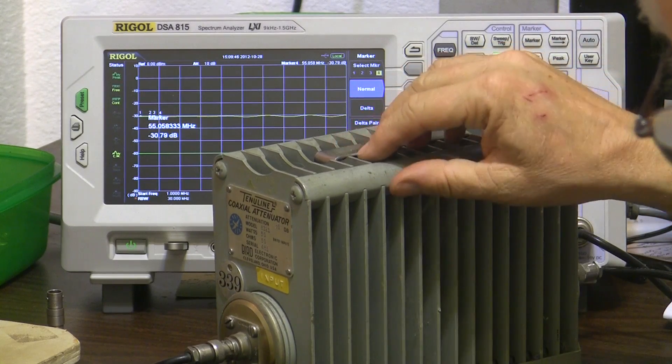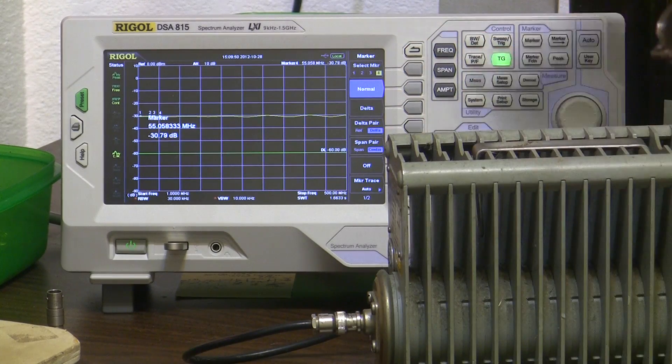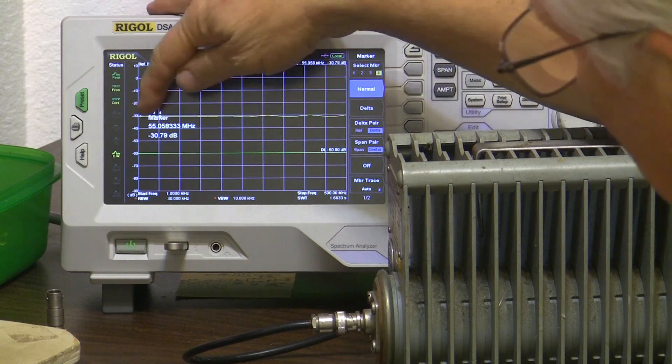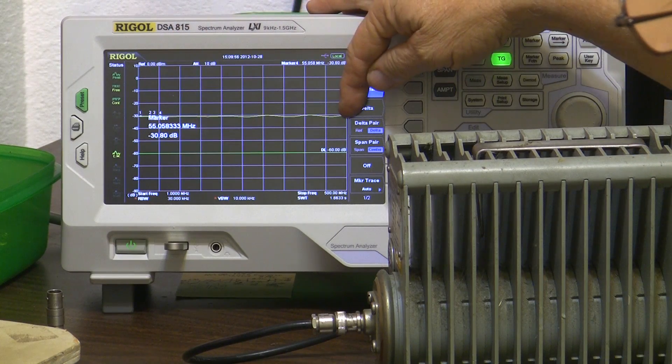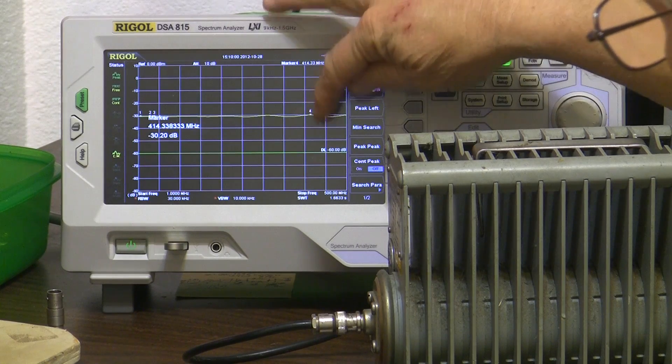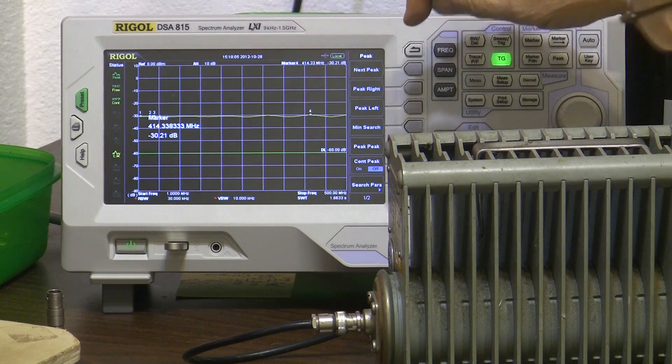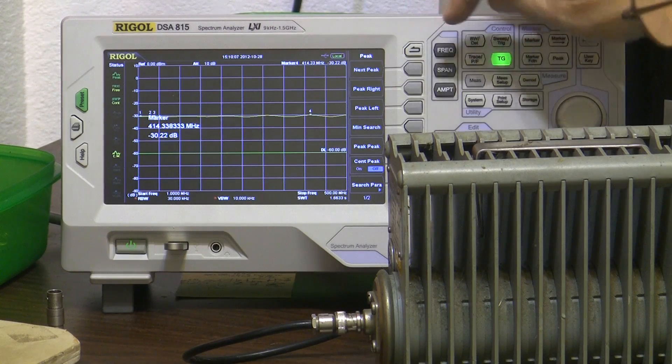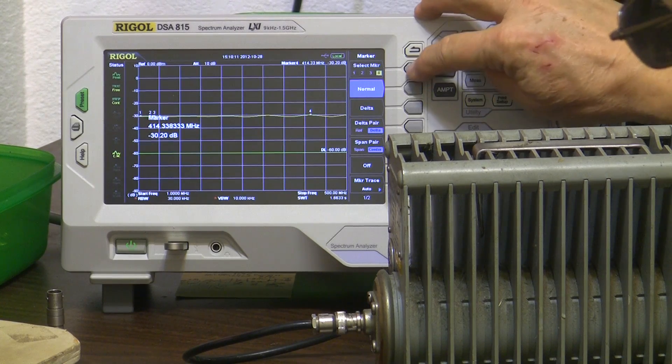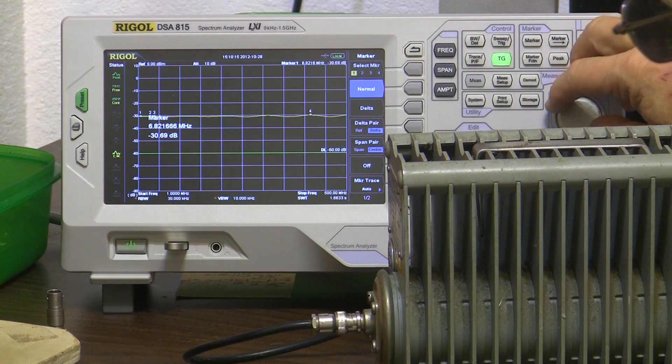Okay, there it is and this is what it does. So we have a little bit of ripple up here as we indicated earlier. We can find out what that is by hitting peak here. There's the top of it, minus 30.2.